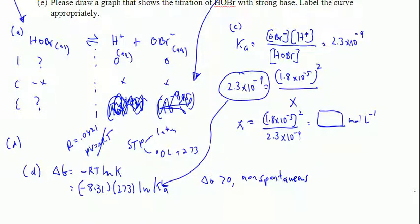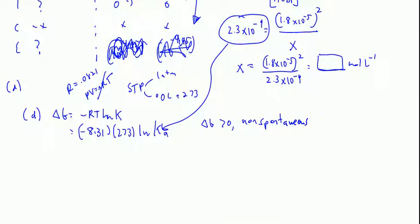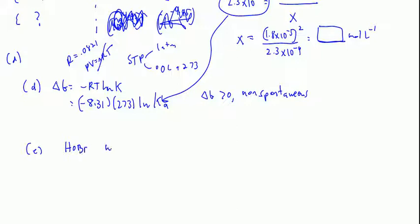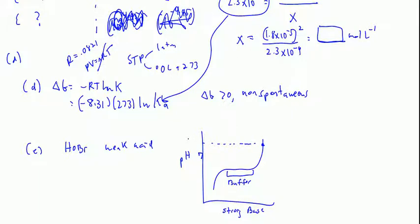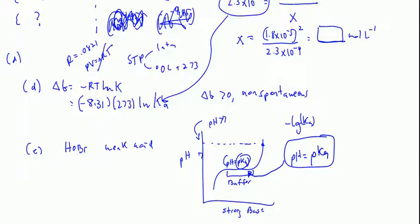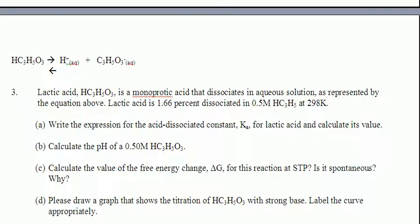Part E: Please draw the graph that shows the titration of HOBR with a strong base. HOBR is a weak acid, so titration of a weak acid with a strong base has this buffer zone where it's resisting the change in pH due to difficulty removing that hydrogen. The equivalence point is at pH greater than 7. At the buffer zone, pH equals pKa. The pKa is simply the negative log of Ka, so if you're at the buffer zone, the pH equals the pKa at that moment.